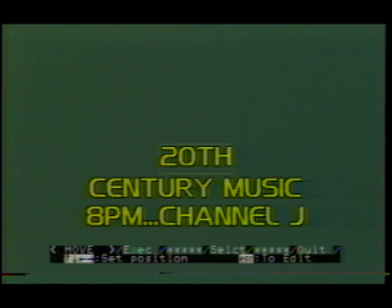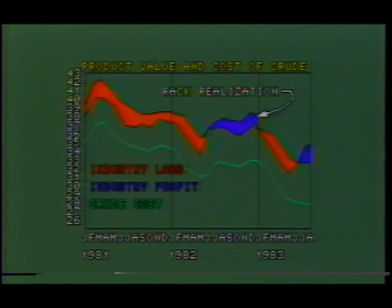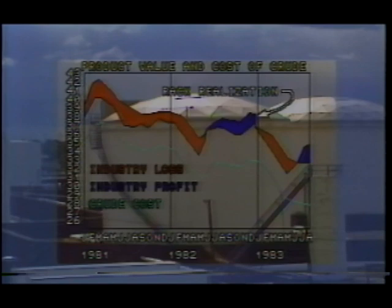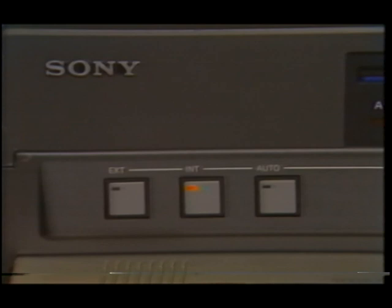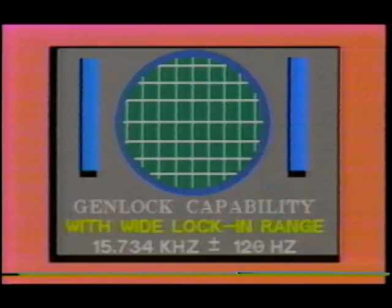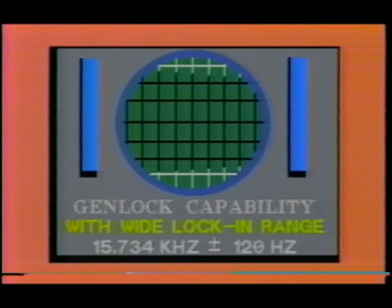There are four picture modes: the computer output, the video output, computer output mixed with video output, and computer output superimposed with video output. You can select an external sync source such as your VTR or sync generator, or the SMC70G can generate sync internally — selected manually or programmed by the software. The SMC70G has a wide lock-in range, enabling it to genlock to VTRs and video disc players without the added expense of a time-based corrector. The SMC70G package has two superimposer options: the NTSC superimposer and the RGB superimposer.